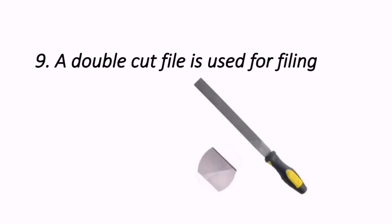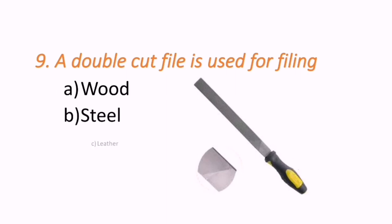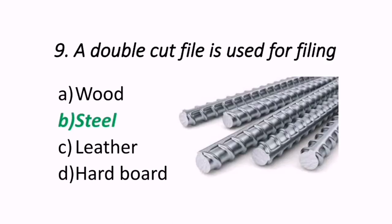Ninth question: a double cut file is used for filing what? Options are wood, steel, leather, or hard bone. The correct answer is that the double cut file is used for filing steel.